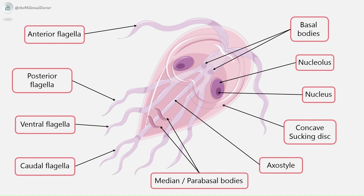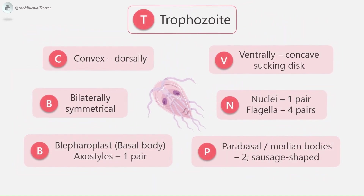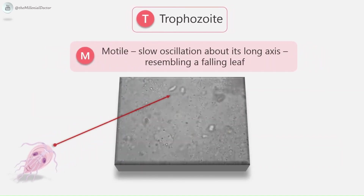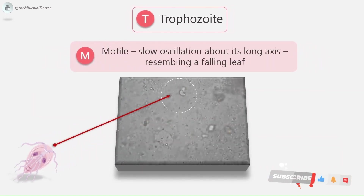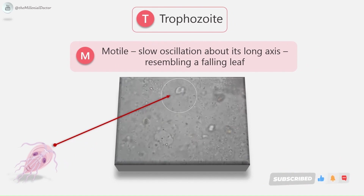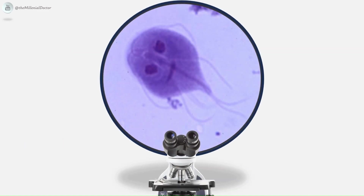In the diagram we can see the structure of the trophozoite and its oscillatory movement. The trophozoite has a concave sucking disc occupying almost the entire anterior half of the body, is bilaterally symmetrical, and possesses 1 pair of nuclei, 4 pairs of flagella, blepharoplasts, 1 pair of axostyles, and 2 sausage-shaped median bodies posterior to the sucking disc. When viewed microscopically, the trophozoite shows this characteristic falling-leaf motion.